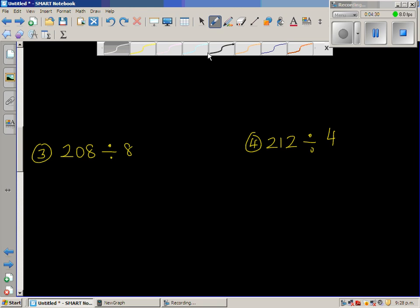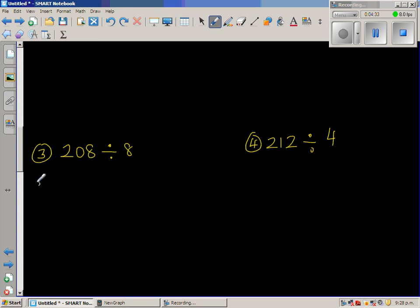208 divided by 8. So I am going to count in 80. So we go 80, then 80 plus 80 is 160, then plus 80 is 240. So this is too much. I am going to write 208 in terms of 160. So I can say 208 is 160 plus 48.